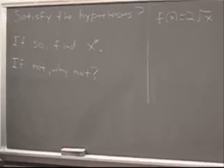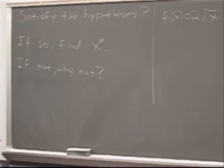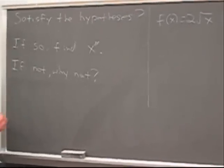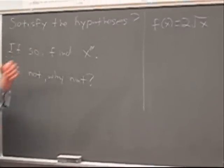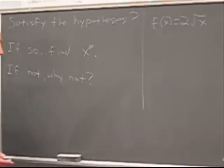Typical questions involving the mean value theorem are as such. They ask you, does this function satisfy the hypothesis of the mean value theorem on such and such an interval? If so, what value is guaranteed to exist? If not, why does the theorem not apply?